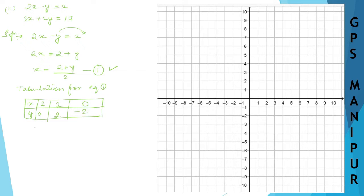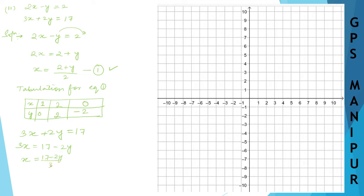Now let us draw the tabulation for the next equation as well. The second equation is 3x plus 2y is equal to 17. Transferring 2y to the other side gives 3x equals 17 minus 2y, so x is equal to 17 minus 2y divided by 3.